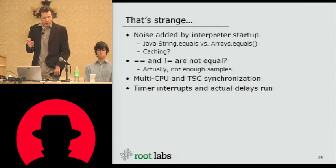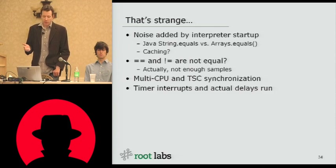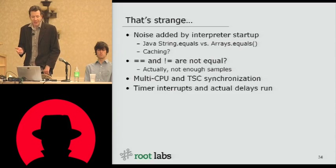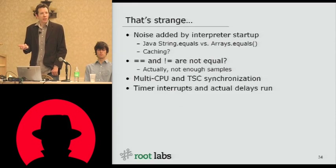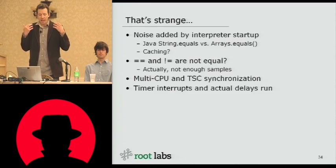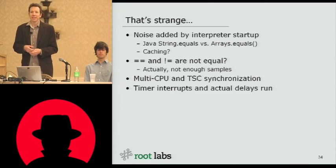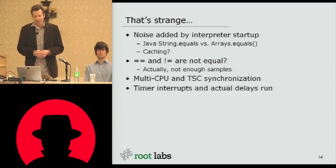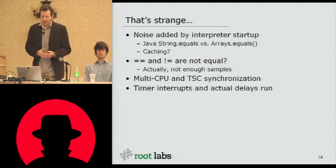We saw weird caching behavior — we're still not sure what those are related to, possibly CPU caching or CPU scheduling behavior. We also ran into something where the equal-equal and not-equal operators in terms of comparisons seemed to be behaving differently. We had questions about whether in a particular language, comparing strings with equals starts from the beginning, and comparing with not-equals starts from the end — because we kept seeing inverted samples. But it turned out we just weren't taking enough samples for that particular configuration.